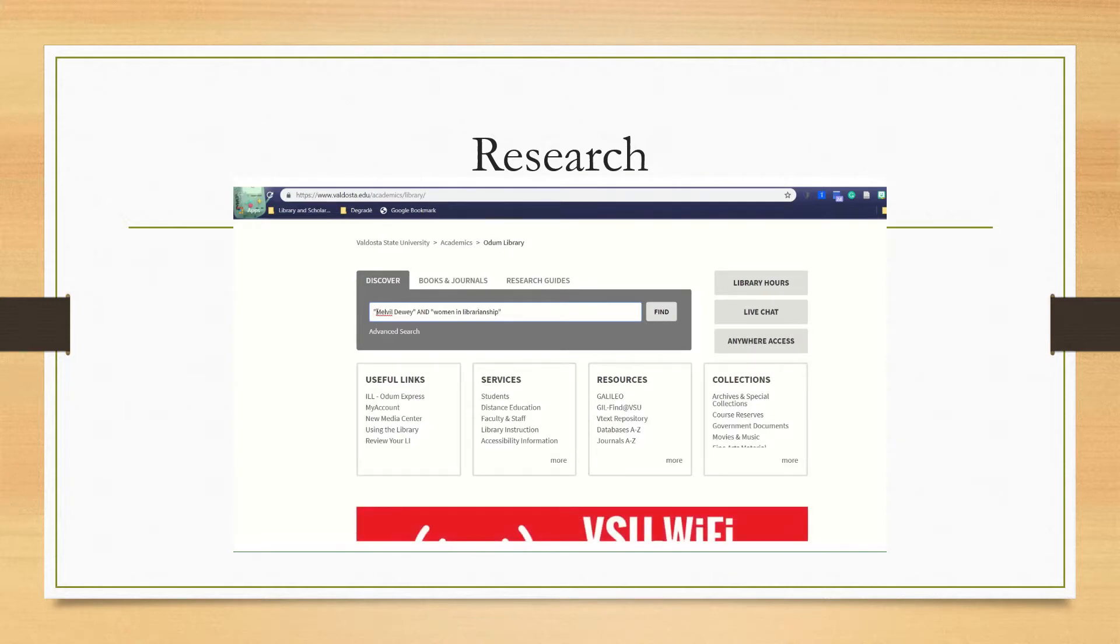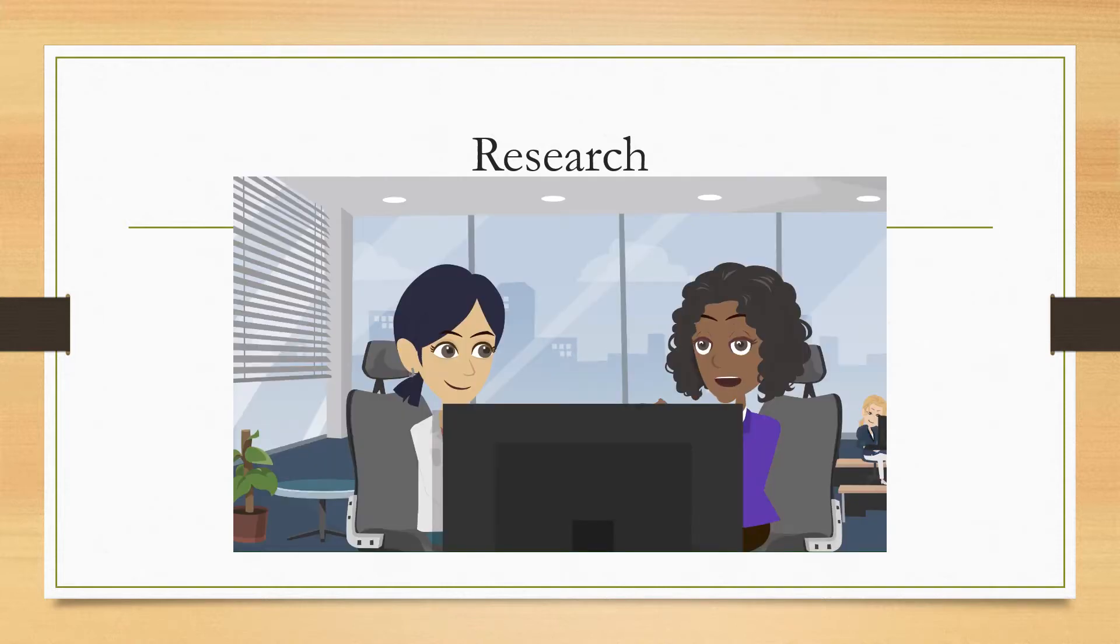Done. Hmm. I'm wondering if women in libraries is too restrictive. Is there a way to include articles that reference the impact Dewey had on one woman or in a single library? Great question. We can truncate some of the words in the phrase. In Galileo, we should be able to use an asterisk for this. Wait, what's truncation?